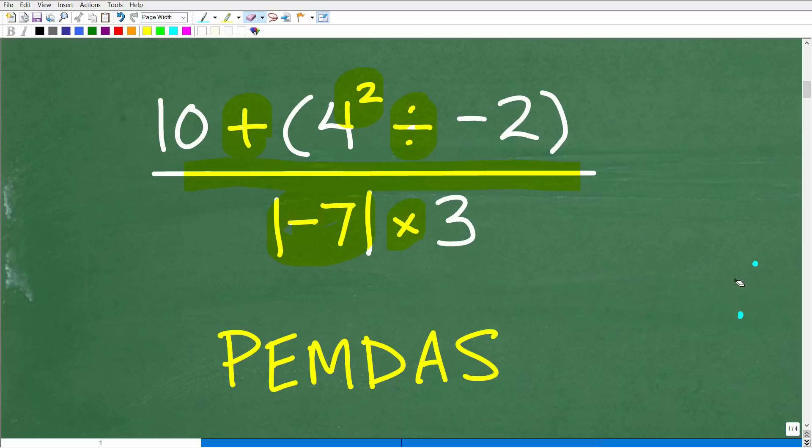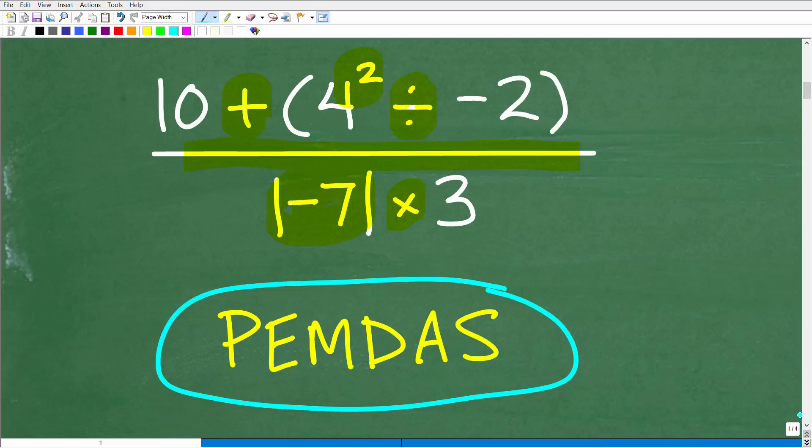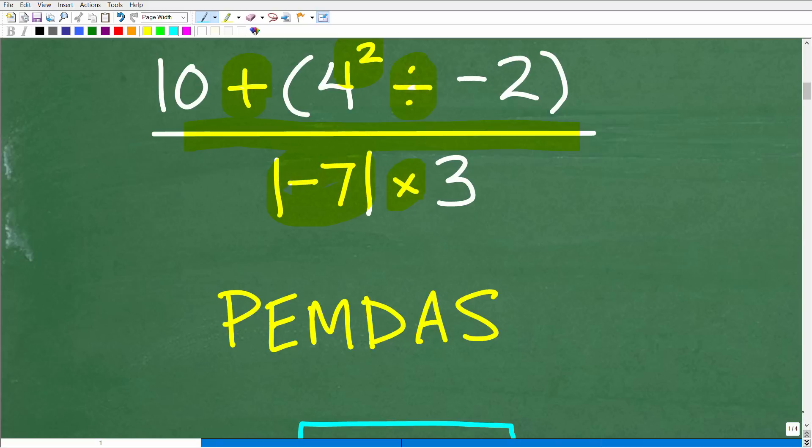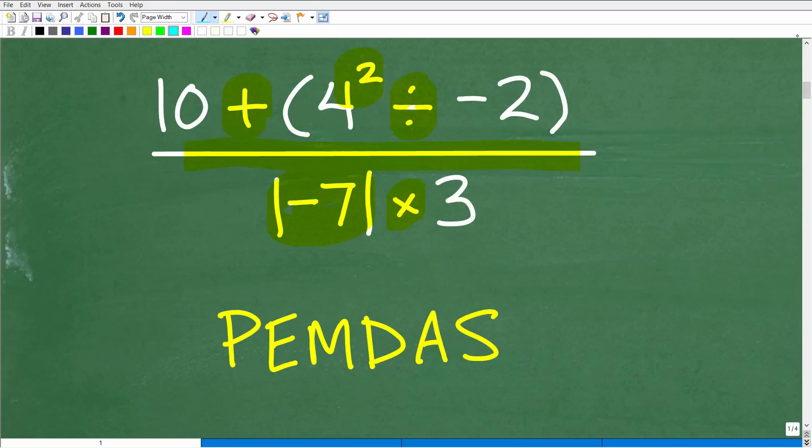So we have all different sorts of mathematical operations going on here. So like addition, division, powers. This thing is called absolute value. Multiplication again. This whole fraction bar. This is division. Like what do we do? Do we do addition first, subtraction, multiplication, division, powers? Like what's the order to do this problem? Because if we do this in various different orders, we're going to get various different answers. Well, luckily for us, we have this cool phrase right here that tells us the exact order to do math problems.